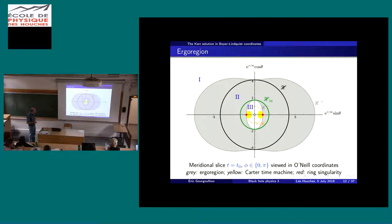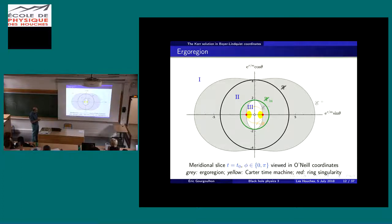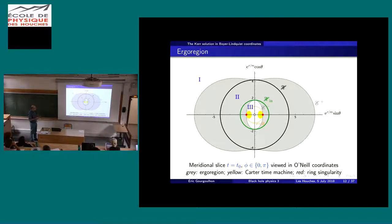We also see the trace of the singularity ring — those two red dots. In yellow is a funny region, very far from our universe, in region 3. This is the so-called Carter time machine, because in that region you have closed time-like curves, meaning you have a time machine. I won't discuss this; in this lecture I focus more on the exterior of the black hole.